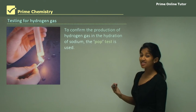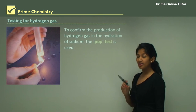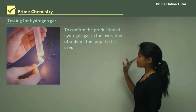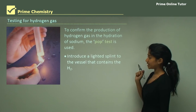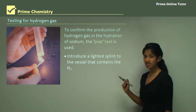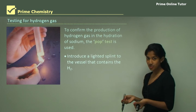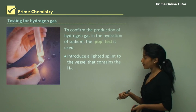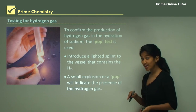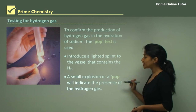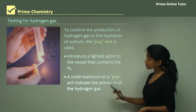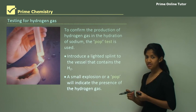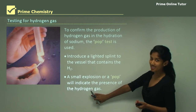Now let's see how to test for the hydrogen gas produced when a metal reacts with cold water. To test it we use what we call the pop test. You introduce a lighted splint to the vessel containing your hydrogen gas — for example a test tube — and if hydrogen gas is present, a small explosion or a pop will indicate its presence. It's usually a pop sound that confirms hydrogen gas is being produced.